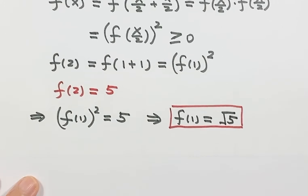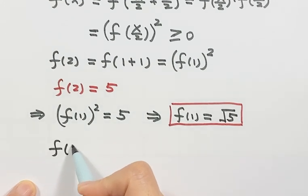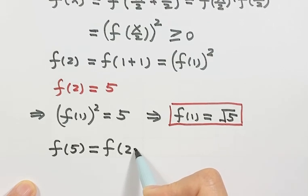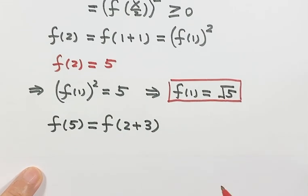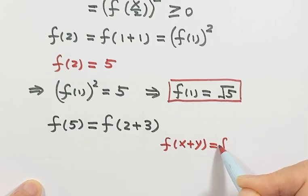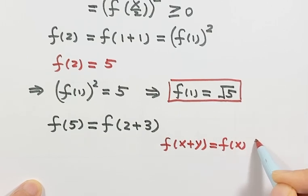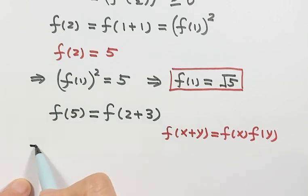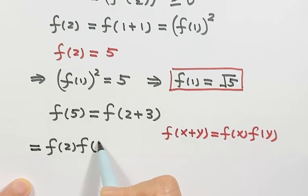Okay, so now let's go back to the question. We want to know what is f(5). Because 5 we can write as 2 plus 3. Let's write down the given condition. Given f(x+y) equals f(x) times f(y), we can write this one as f(2) times f(3) based on the given condition.